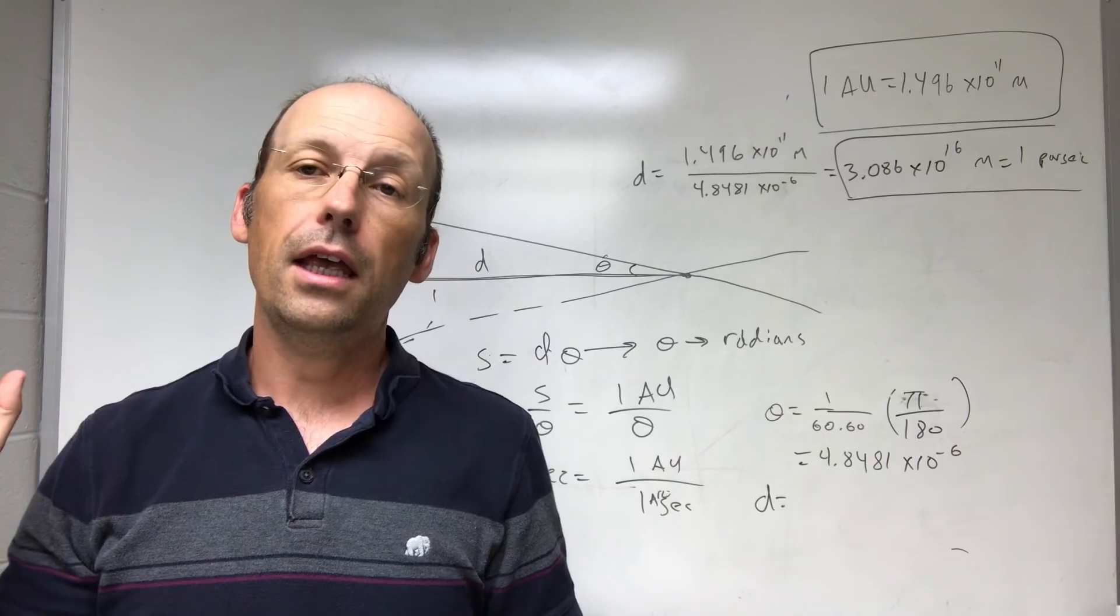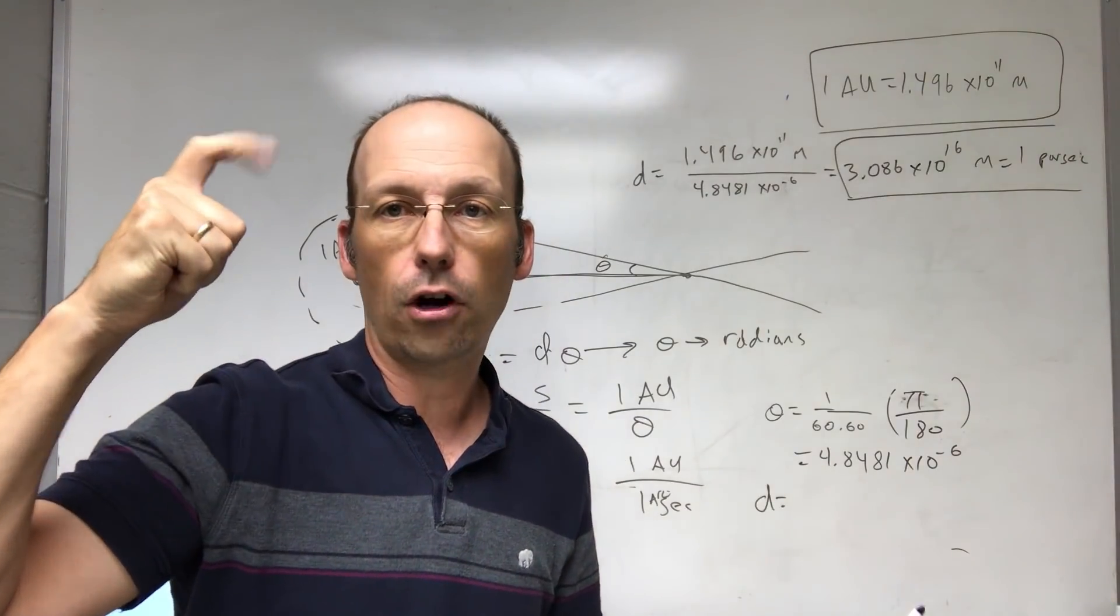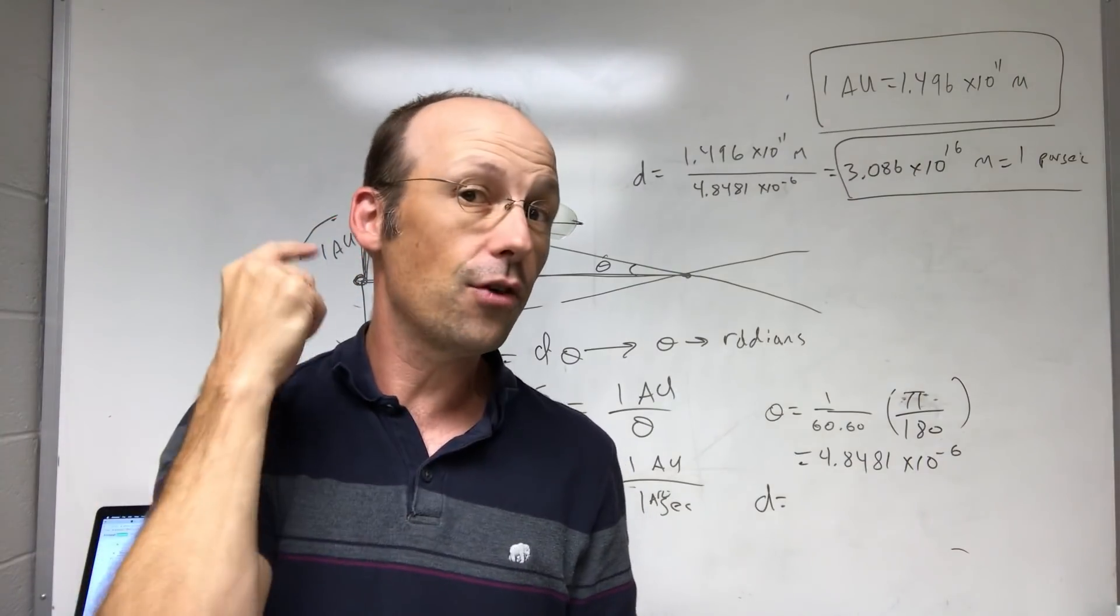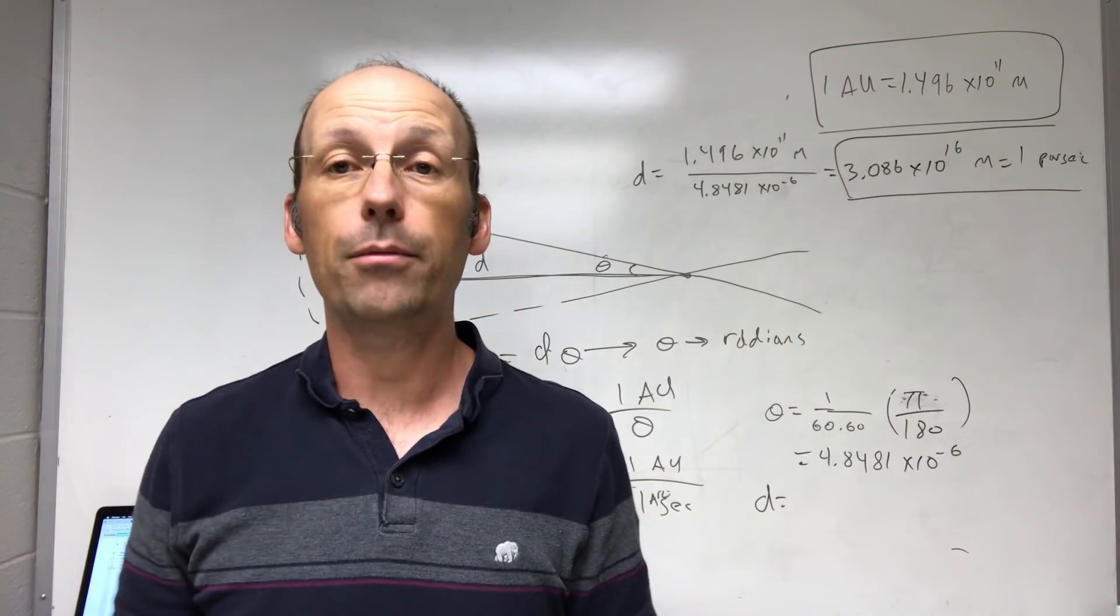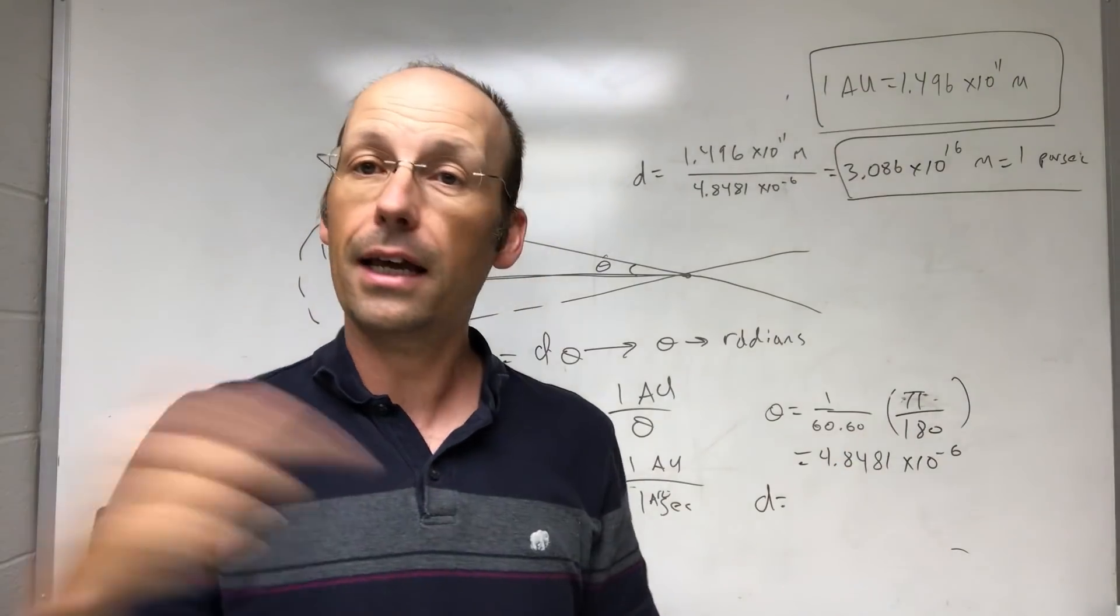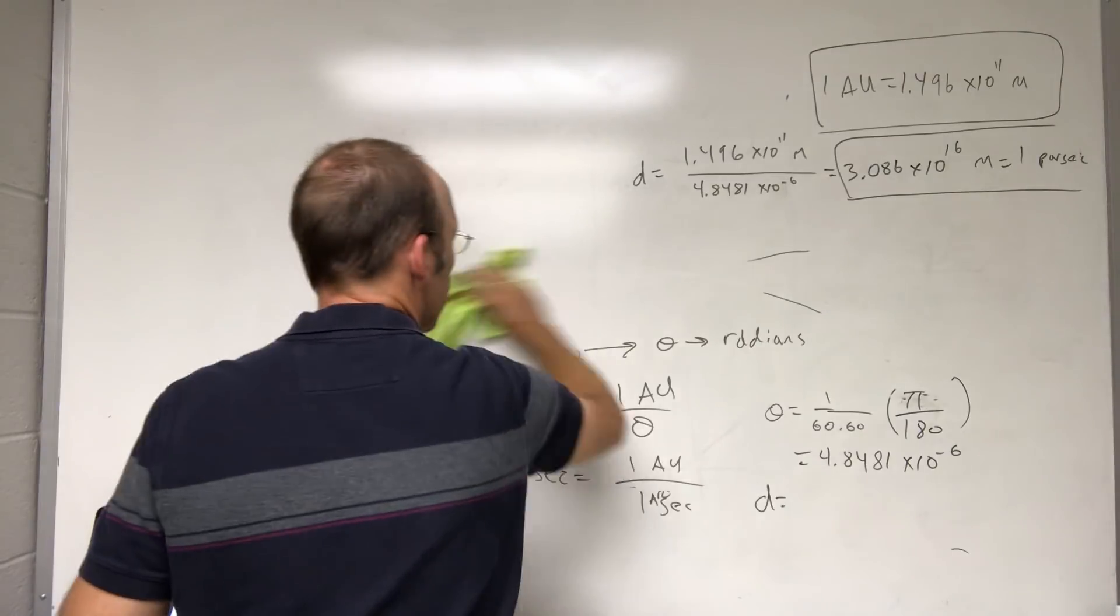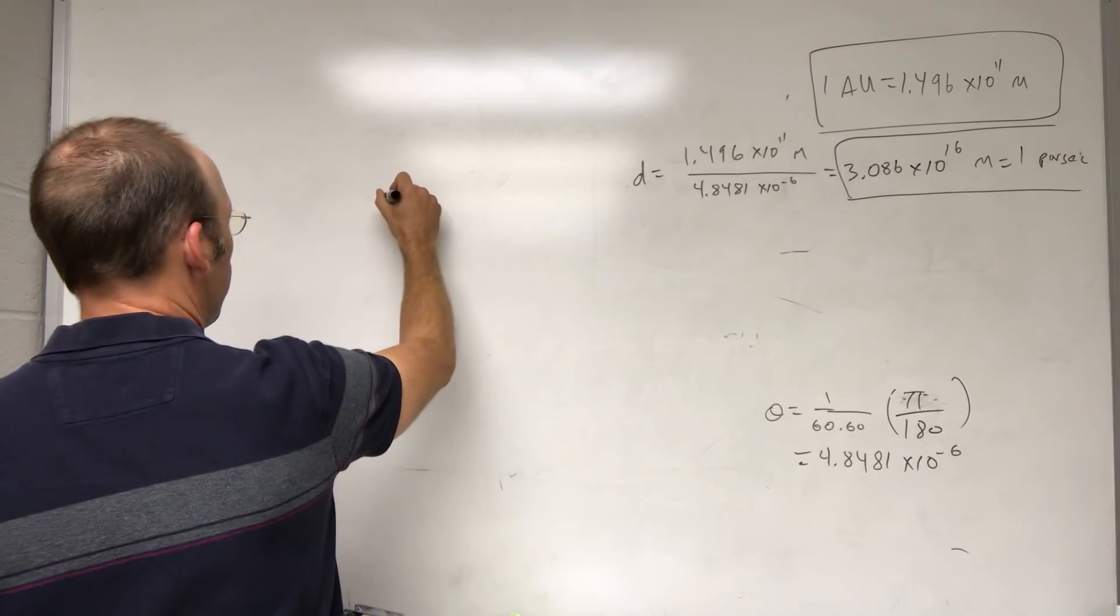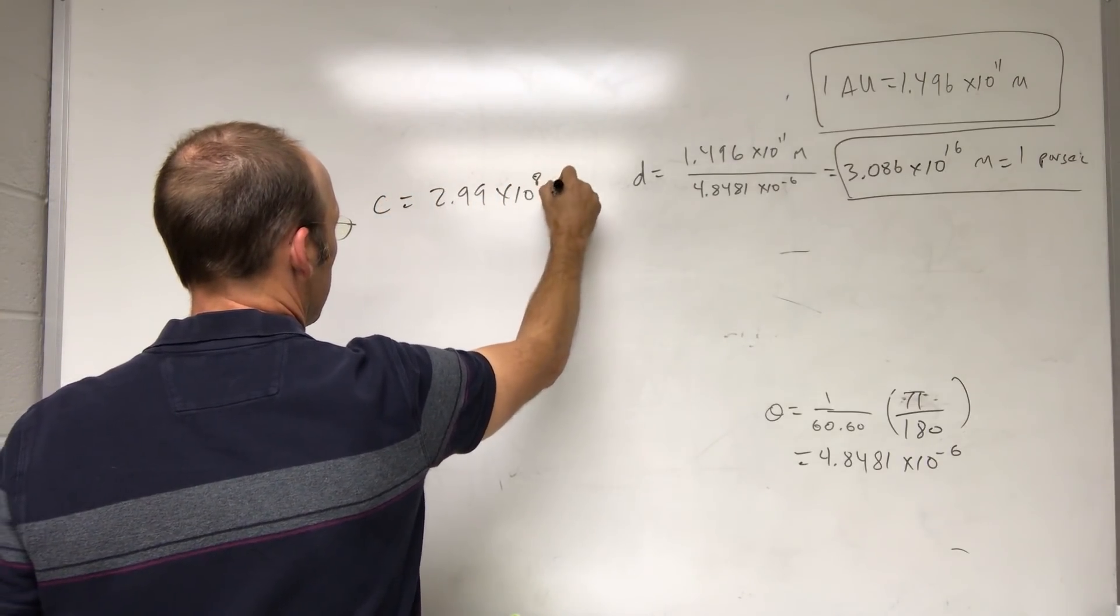So if I clap really loud or if you go to track meet and you hear a starter pistol and you're on the other side of the track, you see it flash and then you hear it because the speed of sound takes some time to get there. Light's the same way. Light takes time to travel. And if I know the time it takes to travel and the speed of light, which is constant, I can calculate the distance. So the speed of light, we'll call that C, is 2.99 times 10 to the eighth meters per second.